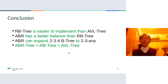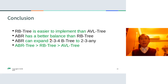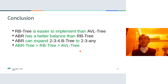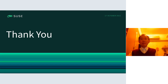Finally, let me give a short conclusion. The red-black tree is easier to implement than the AVL tree, because AVL needs more rotations. AVL has a better balance than the red-black tree. And the ABR tree can expand the 2-3-4 B-tree to a 2-3-M tree with any number of siblings. So the ABR tree is better than the red-black tree, which is better than the AVL tree.